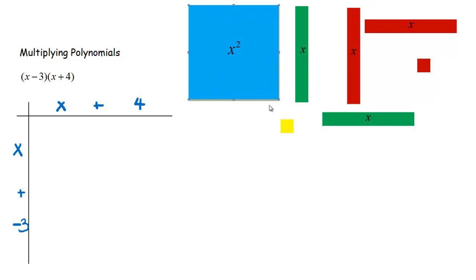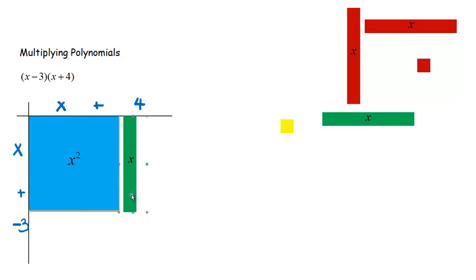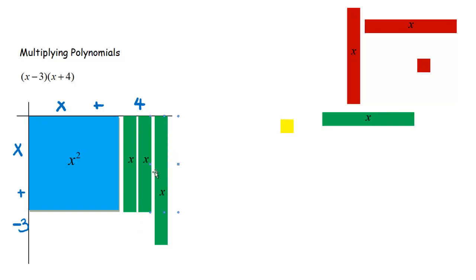So there's my big blue x squared piece — x times x is x squared, so he goes right there. Then x times 4: x times 4 is four x's, so we grab four of them and line them up. There are four x's because four times x is 4x.